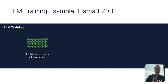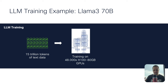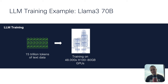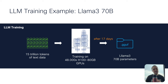What Meta did is they put 15 trillion tokens of text data into their GPU clusters. Basically they were training on 48,000 H100 80-gigabyte GPUs. And after about 17 days of pure GPU power and pure computation, they got LLaMA 3 with 70 billion parameters.